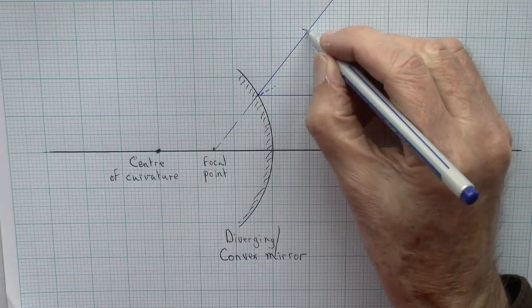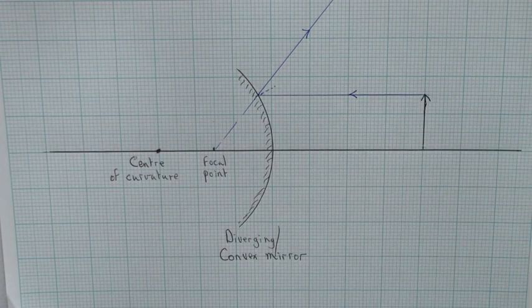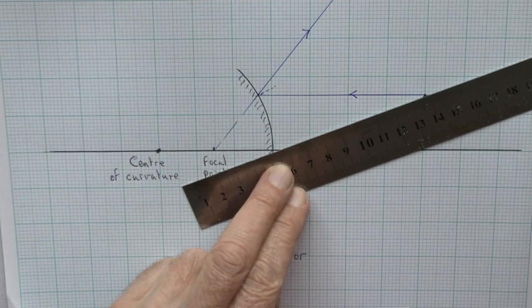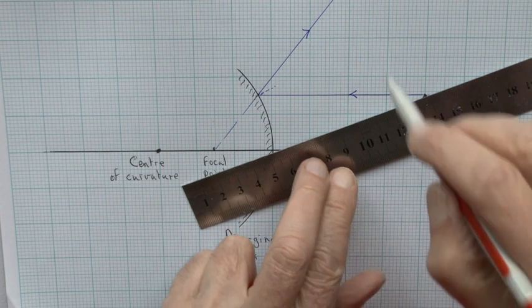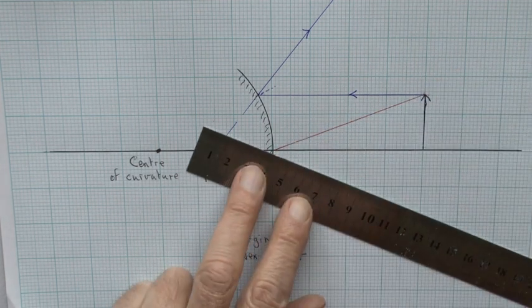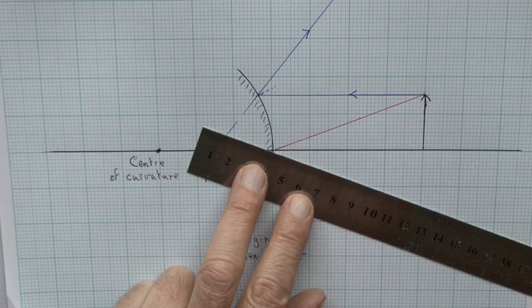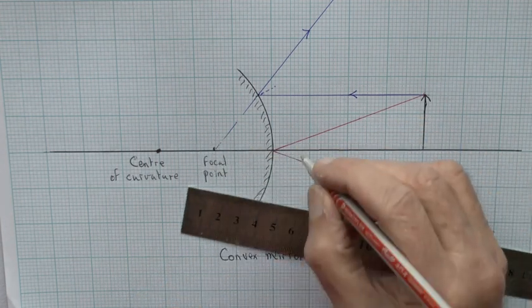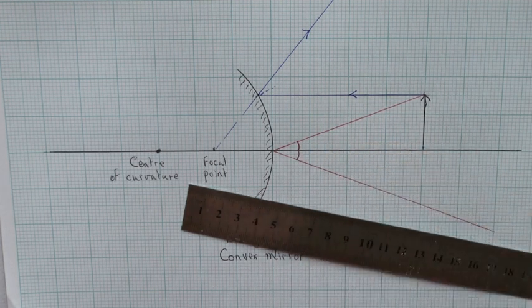Although we don't really need it, I will draw in another ray from the top of the object striking the center of the mirror. This will again reflect at an equal angle, so it will reflect on the diagram downwards, obeying the law of reflection, and trace the point behind the mirror from where it seems to come.